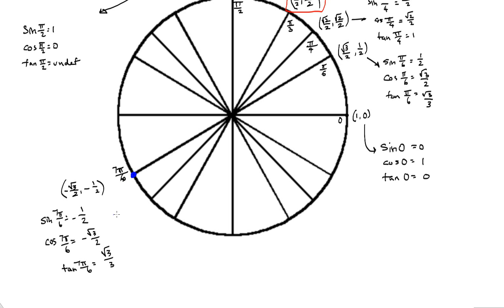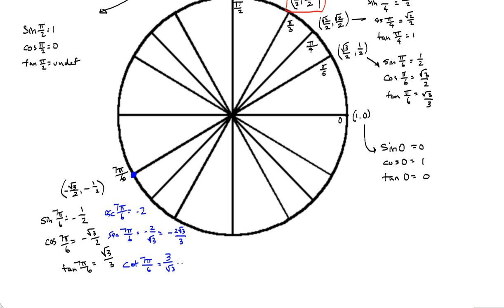Now let's do the reciprocals for 7π/6. The cosecant of 7π/6 is the reciprocal of −1/2, which is −2. The secant of 7π/6 is −2/√3, which when rationalized is −2√3/3. And the cotangent of 7π/6 is the reciprocal of √3/3, which is 3/√3 — and since negative divided by negative gives a positive, that simplifies to √3.